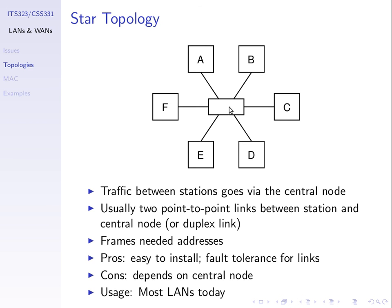Over time the central node evolved. Early versions used a hub, where only one device could transmit at a time — similar to a shared bus. As hardware improved, a true switch was created that can handle simultaneous transmissions from A to F, B to E, and D to C at the same time. Today's LANs use an Ethernet switch or LAN switch as the central device. Hubs are no longer common because a switch costs the same and performs better. The star topology with a switch is used in the LANs we use today.